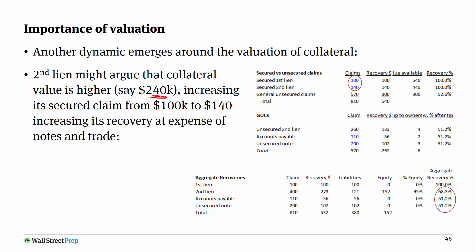They could argue that the inventories, receivables, and property, plant and equipment are worth more — say $240 instead of $200. What does that do? That increases the secured claim of the second liens from $100 to $140 — the excess over the first liens — meaning a larger chunk of their $400,000 claim gets full recovery and priority. Their recoveries are even higher, but at the detriment of the accounts payable and unsecured notes, who lose out on that pari passu treatment with the second liens. Valuation experts and various methodologies for appraising collateral become critical in these situations.